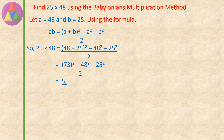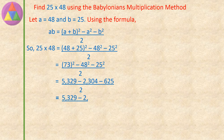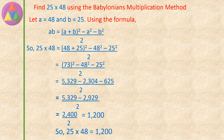73 square is 5329, minus 48 square is 2304, minus 25 square is 625, divided by 2. 5329 minus 2929 equals 2400, divided by 2. 2400 divided by 2 is equal to 1200. So 25 into 48 is 1200.